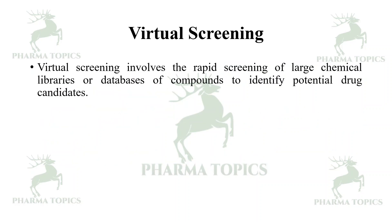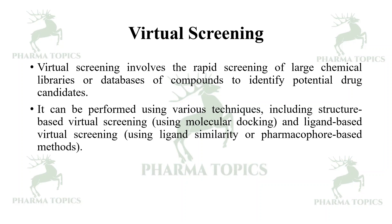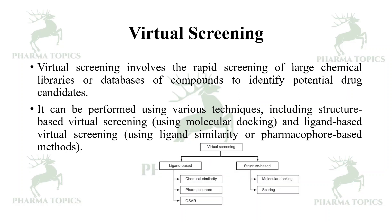Virtual screening involves the rapid screening of large chemical libraries or databases of compounds to identify potential drug candidates. It can be performed using various techniques including structure-based virtual screening using molecular docking, and ligand-based virtual screening using ligand similarity or pharmacophore-based methods. In the structure-based method, where the target protein is known, you use molecular docking and scoring. In the ligand-based case, where you know only the ligand but not the target, you check chemical similarity, pharmacophoric features, and perform QSAR studies.